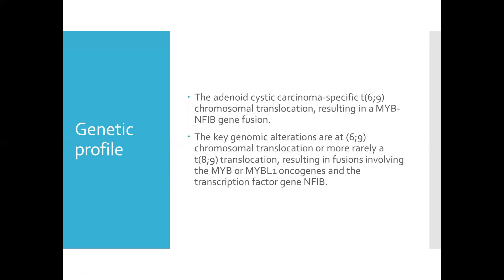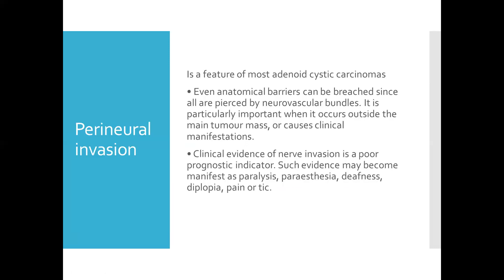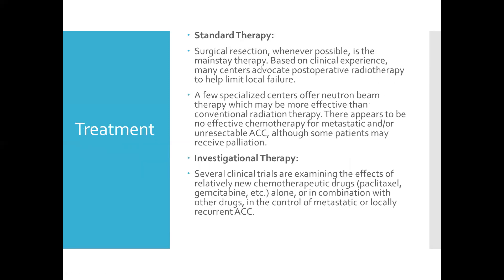Regarding the genetic profile, the ACC-specific translocation is a t(6;9) chromosomal translocation resulting in a MYB-NFIB gene fusion. Over 80 percent of adenoid cystic carcinomas show a translocation involving the MYB oncogene and the transcription factor gene NFIB. Perineural invasion is a feature of most ACCs — even anatomical barriers can be breached since nerves are accompanied by neurovascular bundles. Clinical evidence of nerve invasion is a poor prognostic indicator and may manifest as paralysis, paresthesia, deafness, diplopia, pain, or a tick sensation.